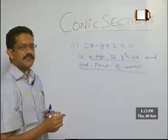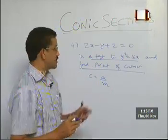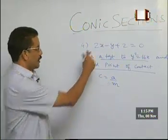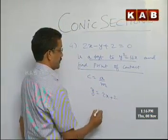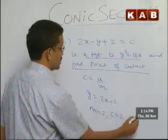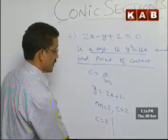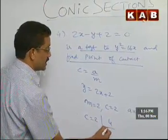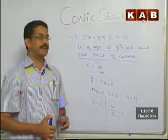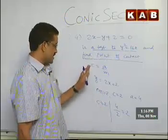We have to show it is a tangent — for tangent, c should be a/m. Writing the equation as y = 2x + 2, m = 2, c = 2, and a = 4. So a/m = 4/2 = 2. Since c = 2 = a/m, this is verified, so this line is a tangent to the given parabola.